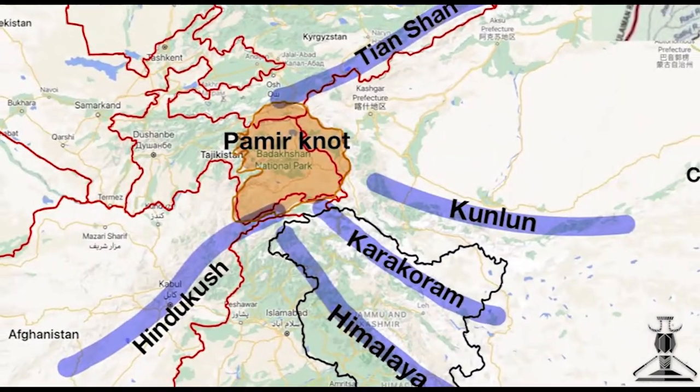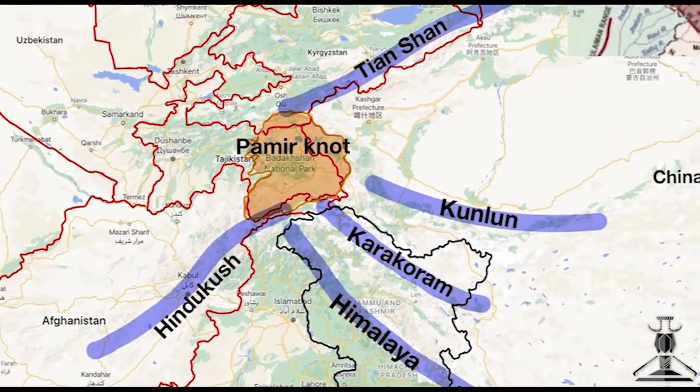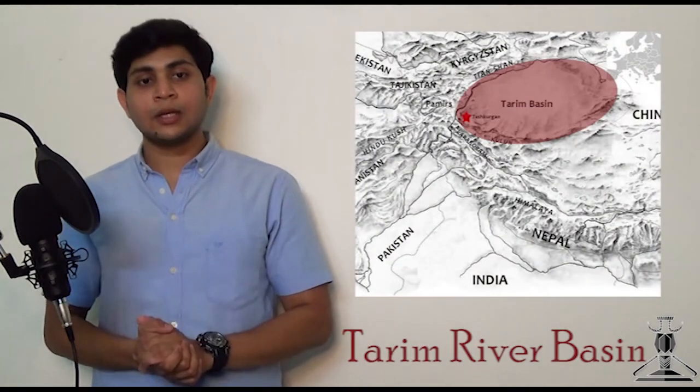Mountain ranges radiate from the Pamir mountain complex in all four directions, as shown in the figure. Badrashwa is then identifiable with the Tarim Basin to the east of Pamir, through which the Tarim river flows. Ketu Mala is identifiable with Tokharistan, i.e. Tushar, on the banks of the Oxus river, i.e. Amu Darya.